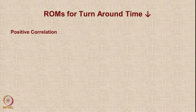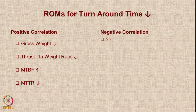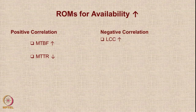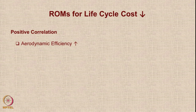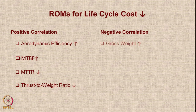For turnaround time: reducing it is helped by gross weight and thrust-to-weight ratio, while mean time between failures (MTBF) goes up and mean time to repair (MTTR) reduces. For availability: if MTBF increases, availability increases; if MTTR reduces, availability increases. However, as life cycle increases, life cycle cost increases — that is a problem. For life cycle cost: positive correlation with aerodynamic efficiency and MTBF; negative correlation with gross weight. Increasing TSFC makes it worse.